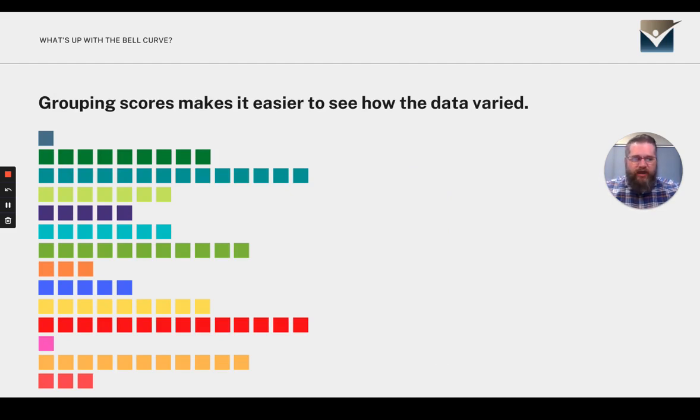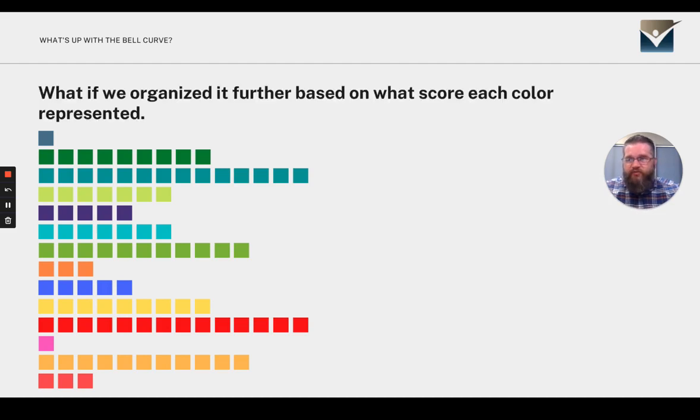Looking at how the colored blocks are organized here in groups, we can see that the bluish green color and the red color had more, and you can kind of compare those two to how all of the other squares did as well.